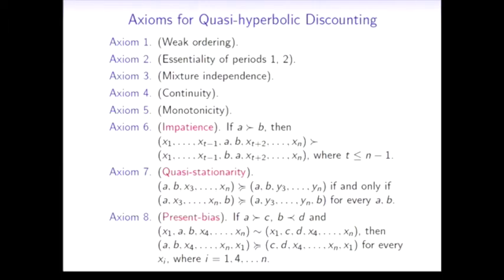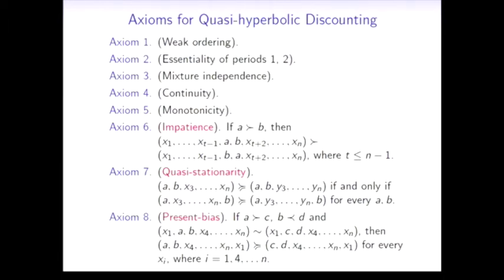Because a is greater than c whereas b is smaller than d, then if we shift both consumption forward, our choice is skewed to the more impatient consumption stream. These eight axioms give us the following form of discounting.